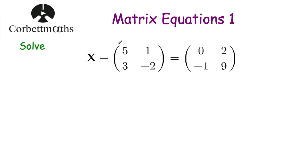So we've got x subtract the 2 by 2 matrix [5, 1, 3, -2] and that's equal to the 2 by 2 matrix [0, 2, -1, 9]. So if we want to find out what x is, we want to get rid of this subtract [5, 1, 3, -2]. So if we want to get rid of this matrix we're going to add it to both sides of the equation.